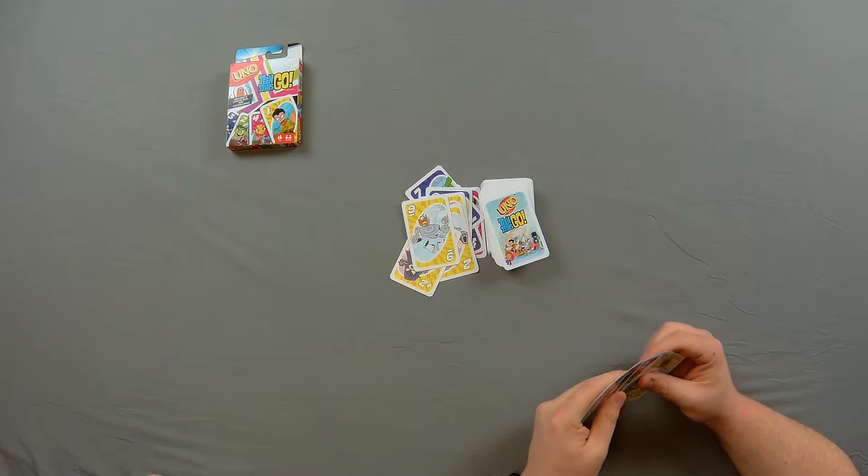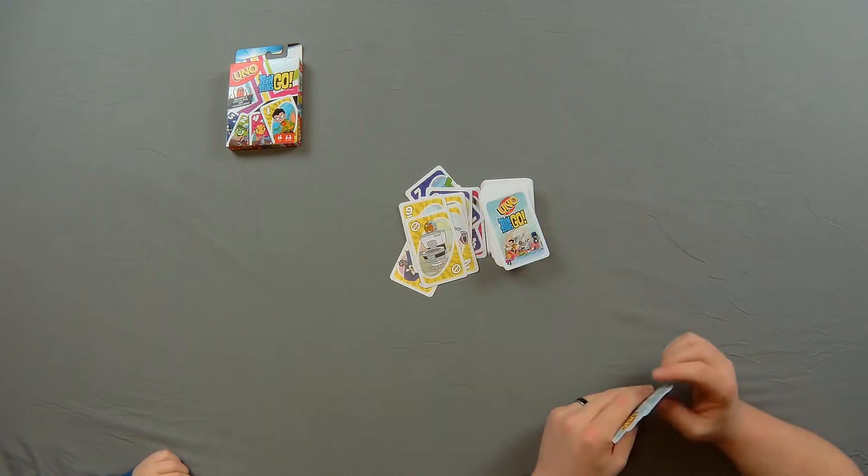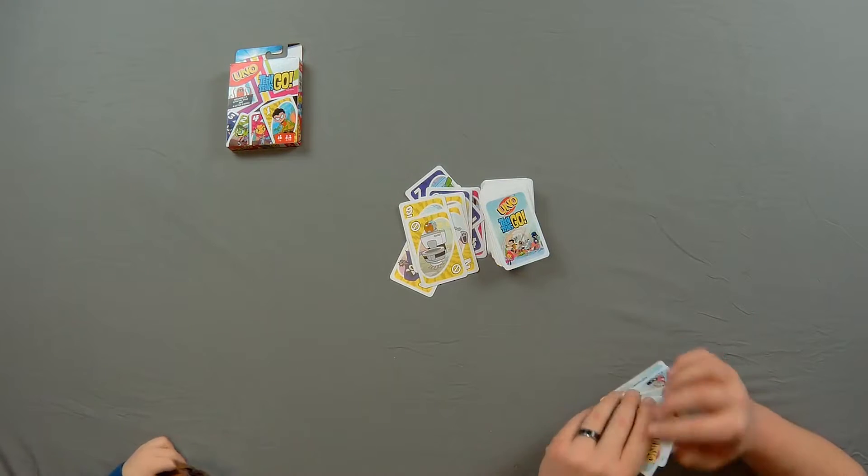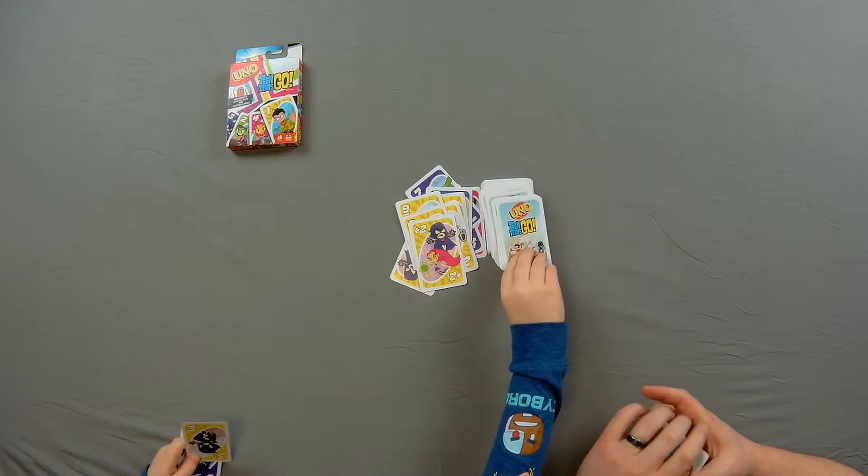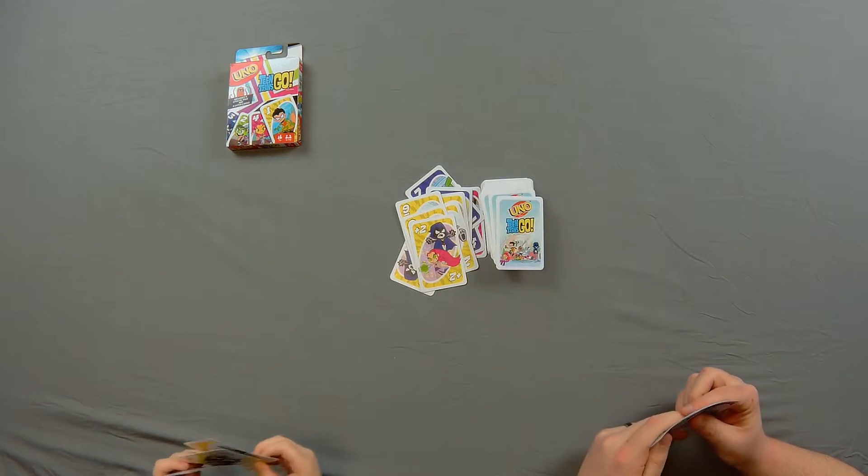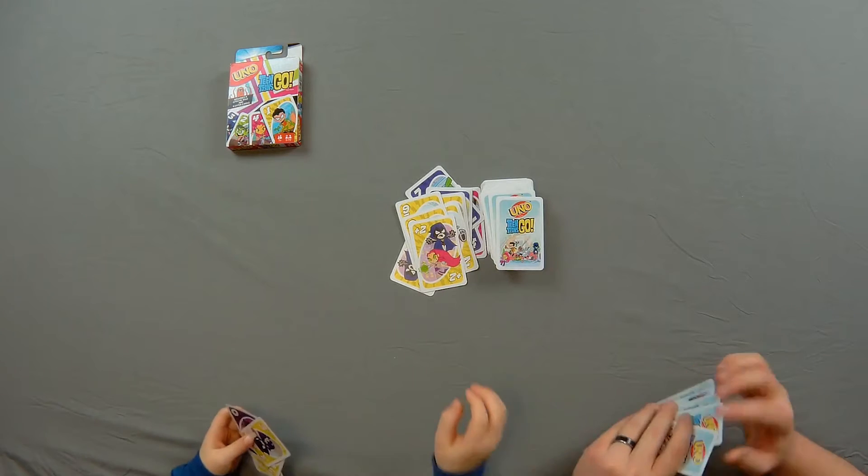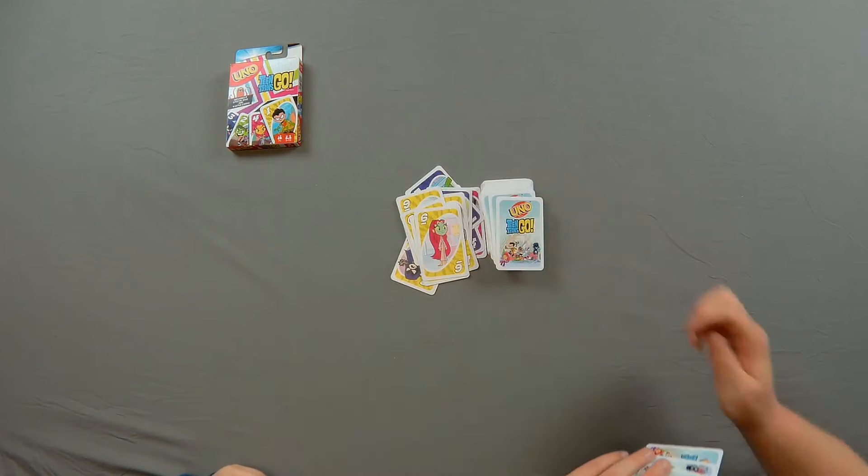And now it's back to Jonah's turn. Because when you have to draw, that takes your entire turn. Ooh, you got a nine. Alright. So I'm going to do a skip on Jonah. Ha! So now it's back to my turn again. Plus two, Jonah! I don't care. Now I got four again. Okay. And how many do you have? I have four as well. But it's my turn. Oh, darn. Alright. Back to you.